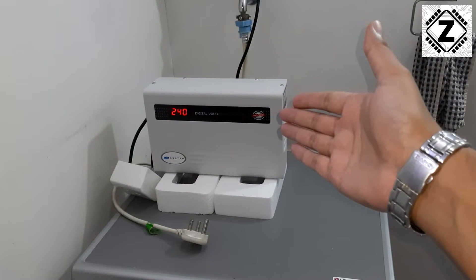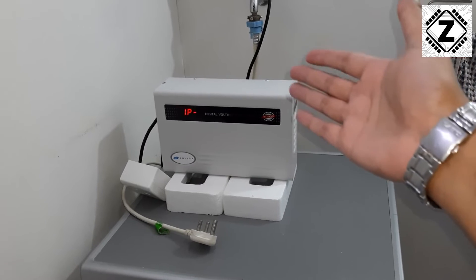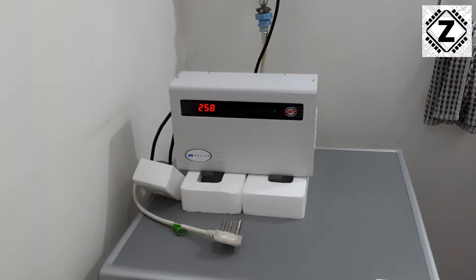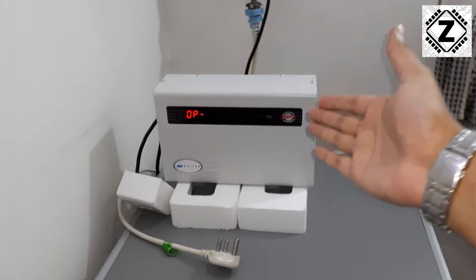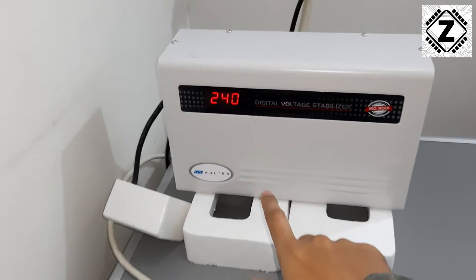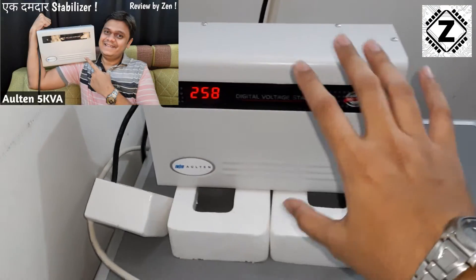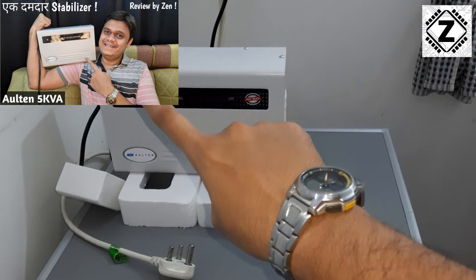Let's understand what is this idle draw or self power consumption. Now over here I have this particular specimen. This is a V-Guard stabilizer. The full review is over here if you want to check it out.